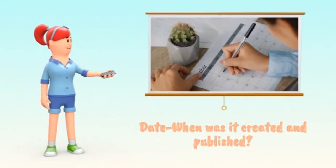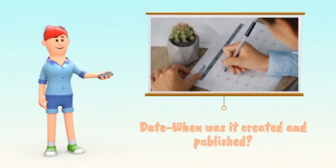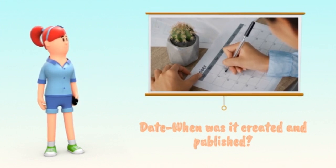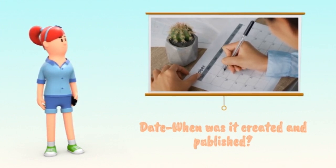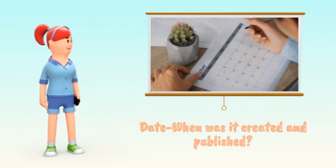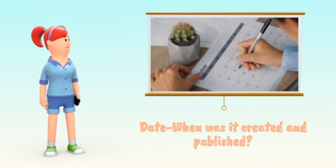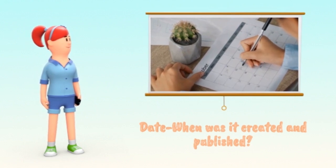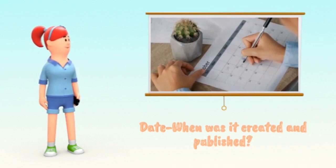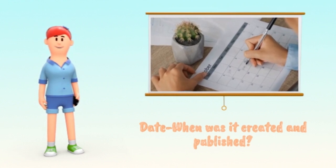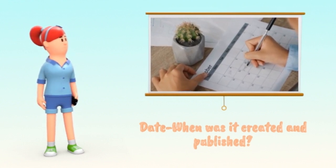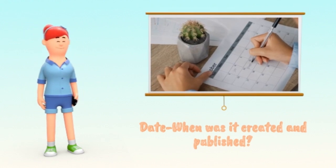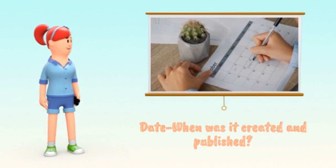In an age where information floods us 24/7, photos and videos are proving to be one of the most powerful weapons for impact. We need to be highly critical of images and videos that reach us without a clear source. The reverse image lookup option is a key fact-checking tool — it allows us to check a photo in an image search engine to find when and how it has been used before, revealing if it is an old image attached to a new story, an approach often used by the media.